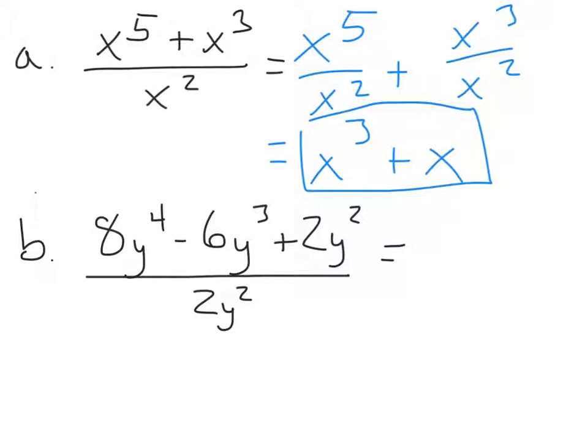Eight over two will be four. So we'll get four. Y to the fourth over y squared. We're going to do the quotient rule there. So it'll be four y to the second. That's our first piece. Now the second piece is negative, so let's just put a minus. Then we're going to do six over two, which is three. And then we have y to the third over y squared. Three minus two is one, so we just get y to the one, or just y.